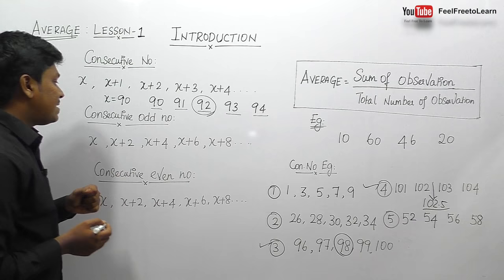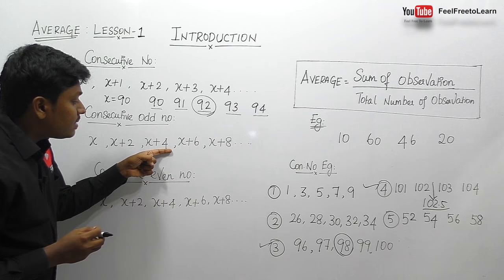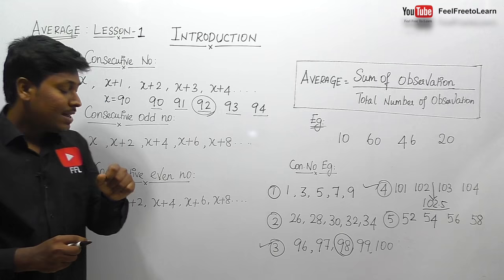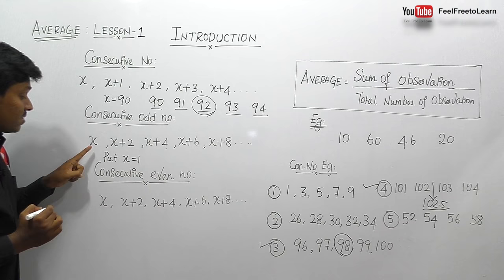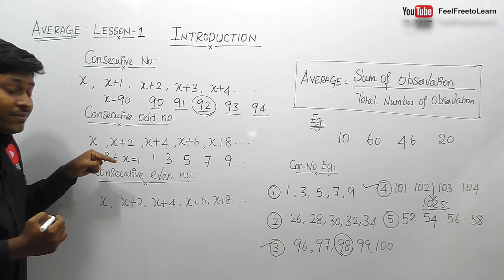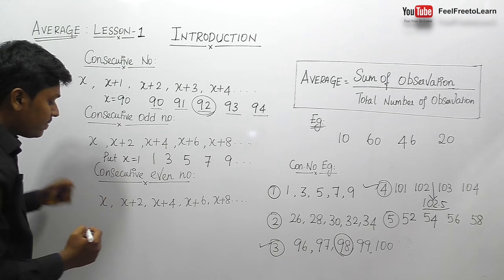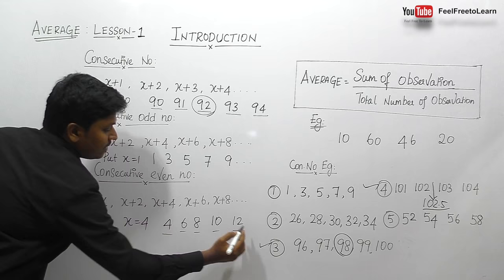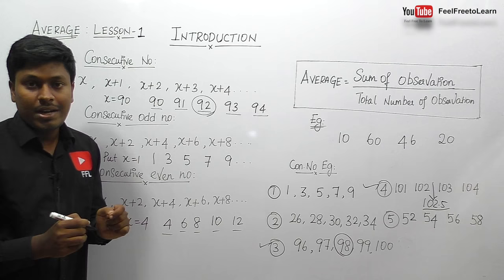The second case is consecutive odd numbers, and next is consecutive even numbers. Both use the same formula — x, x+2, x+4, x+6, and so on. The value substituted for x determines whether the result is consecutive odd or consecutive even numbers. If x equals 1 (odd), we get 1, 3, 5, 7, 9. If x equals 4 (even), we get 4, 6, 8, 10, 12.